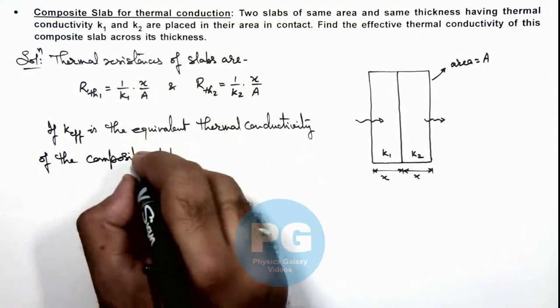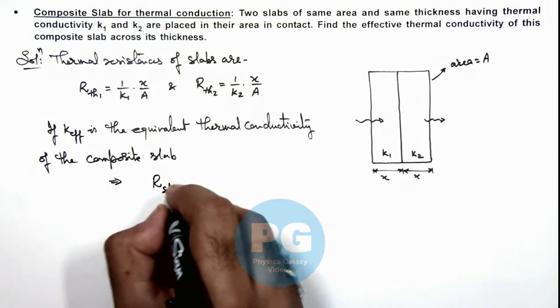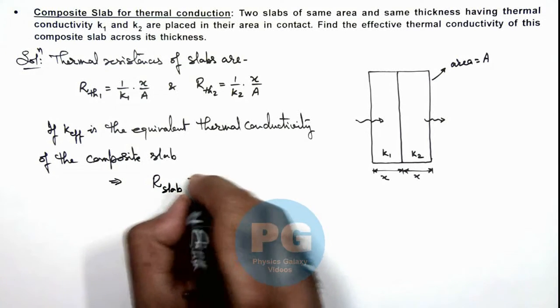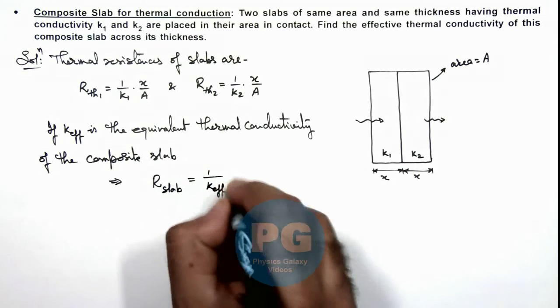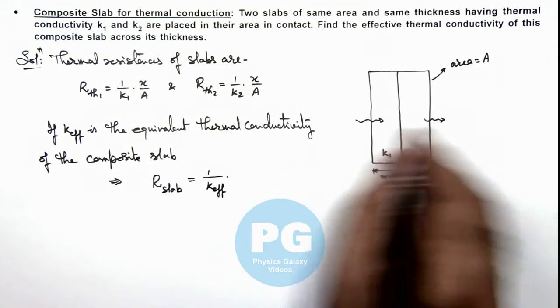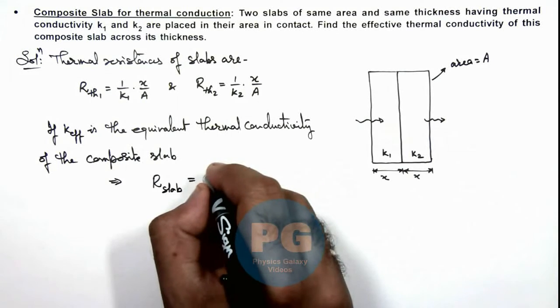Then this implies we can write the total thermal resistance of the slab can be written as 1 by k_eff multiplied by 2x by A, as the width through which the heat is flowing is 2x divided by cross-sectional area A.